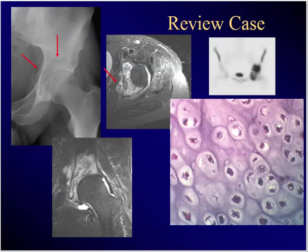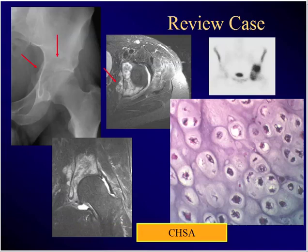55-year-old, excruciating hip pain, awakens from sleep at night, worse when he walks on it, no fevers, no history of trauma — this plain film, bone scan, MRI, and histopath. What's the diagnosis? Chondrosarcoma. Notice the soft tissue mass coming outside in this periacetabular area. Chondrosarcoma.